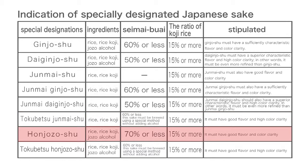Honjōzō-shu: the ingredients must be rice, rice koji, and jozo alcohol. It must have a polishing ratio of 70% or less. The ratio of koji rice must be 15% or more. It must have good flavor and color clarity.